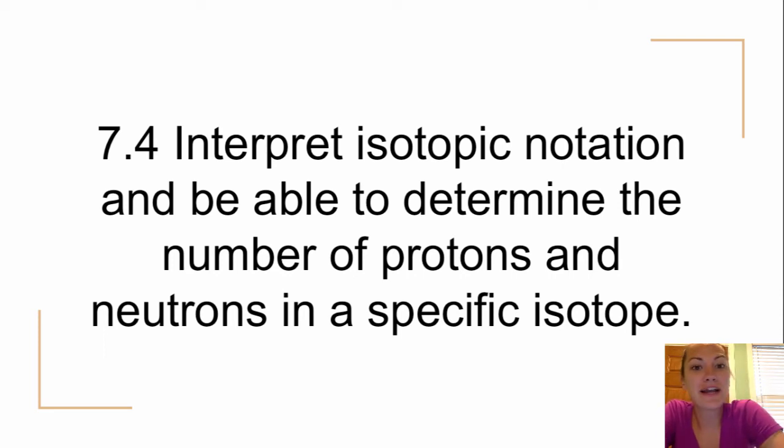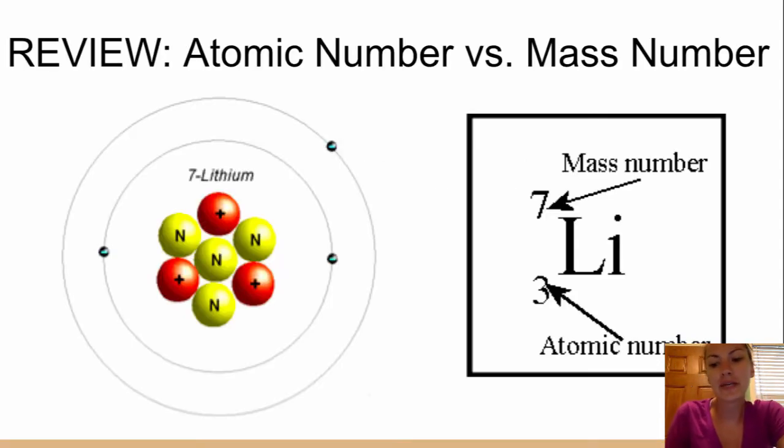Alright, so today we are going to be talking about interpreting isotopic notation and being able to describe the number of protons and the number of neutrons in a specific isotope. This is standard 7.4. So the first thing that we need to remember is we need to remember the difference between atomic number and mass number.